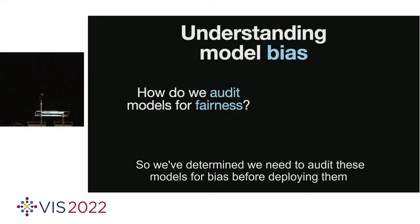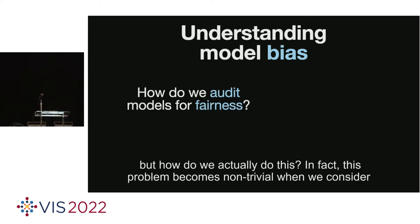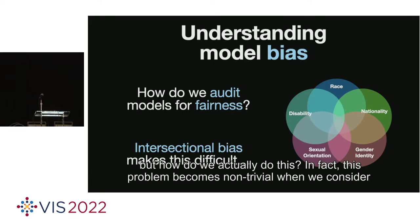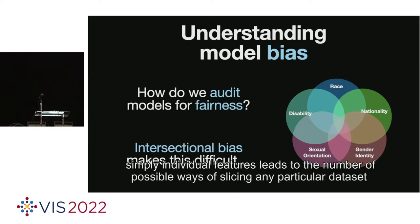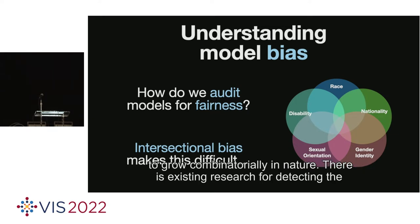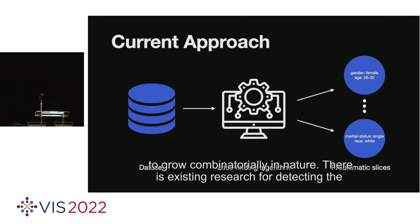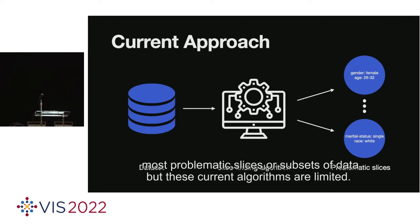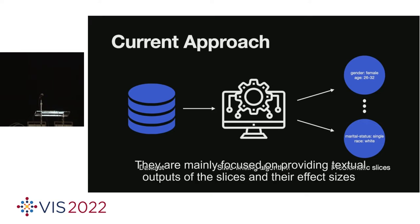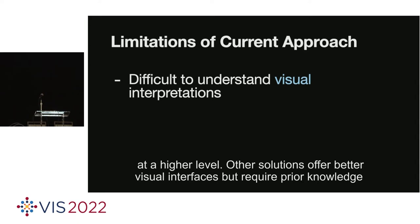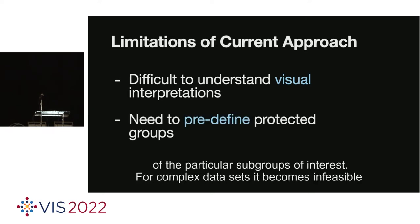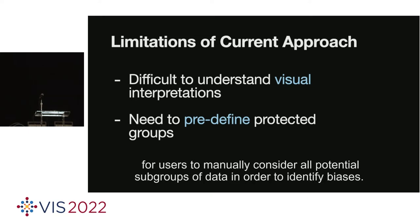So we've determined we need to audit these models for bias before deploying them. But how do we actually do this? This problem becomes non-trivial when we consider that bias can be intersectional in nature. Looking at combinations of features rather than simply individual features leads to the number of possible ways of slicing any particular dataset to grow combinatorially. There is existing research for detecting the most problematic slices, but these current algorithms are limited. They mainly provide textual outputs and fail to offer a visual interface. Other solutions offer better visual interfaces but require prior knowledge of particular subgroups of interest.